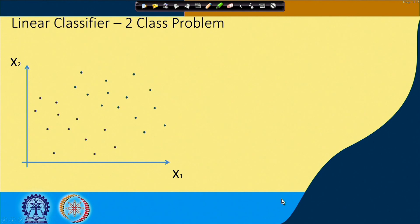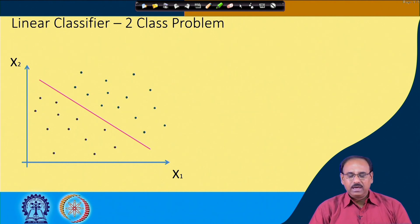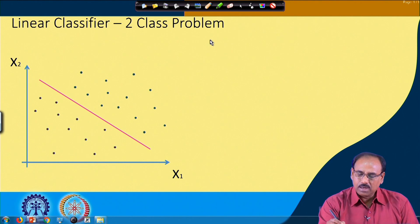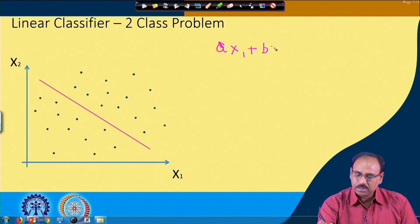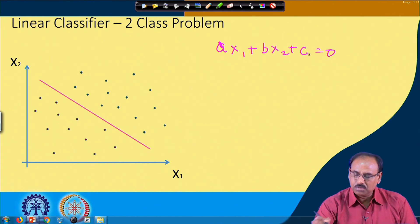The linear classifier that we are discussing is for a two-class problem — we have samples belonging to two different classes, say omega_1 and omega_2. I assume that the samples are linearly separable. Given these two training samples from classes omega_1 and omega_2, I can separate them using a linear boundary. The linear boundary in a two-dimensional case will be a straight line having an equation of the form A·x₁ + B·x₂ + C = 0.